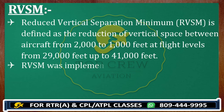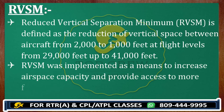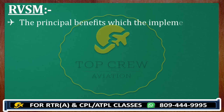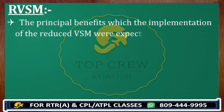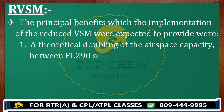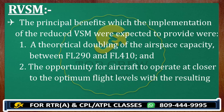RVSM was implemented as a means to increase airspace capacity and provide access to more fuel-efficient flight levels. The principal benefit is a theoretical doubling of airspace capacity between FL290 and FL410. There is also the opportunity for aircraft to operate closer to the optimum flight level with resulting fuel economies. We need not maintain 2000 feet separation when 1000 feet is sufficient — so it is definitely cost-effective.